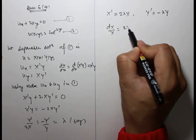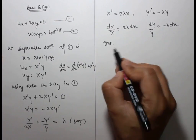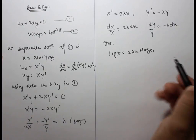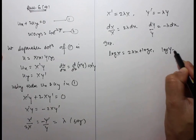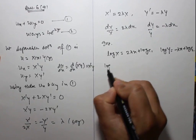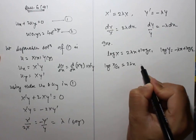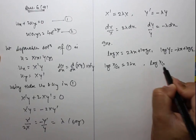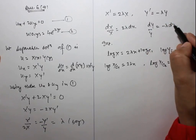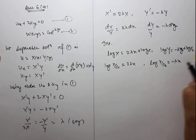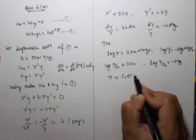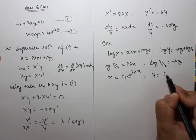Integrating dX/X equals 2λ dx gives log X equals 2λx plus log c₁, so X equals c₁e^(2λx). Similarly, integrating dY/Y equals minus λ dy gives Y equals c₂e^(minus λy).